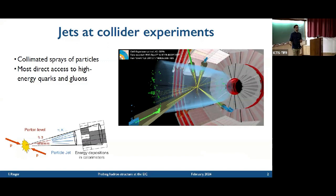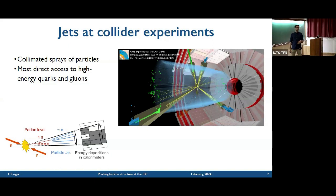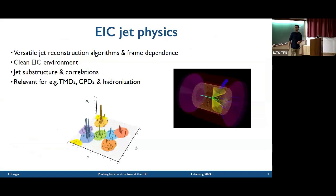Let me get started with jets. We've already heard about this at the workshop, but jets are these collimated sprays of particles that we see in the detector. You see here an illustration from CMS where you see in particular these four jets that come out from the hard scattering vertex where these cones are drawn around them. To first approximation, we can think of those basically originating from a high energy quark or gluon.